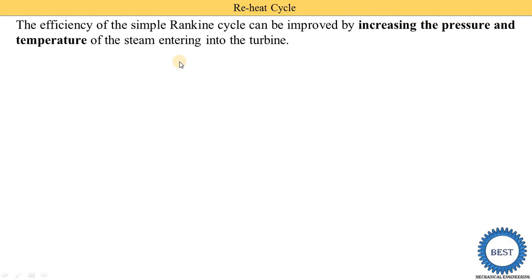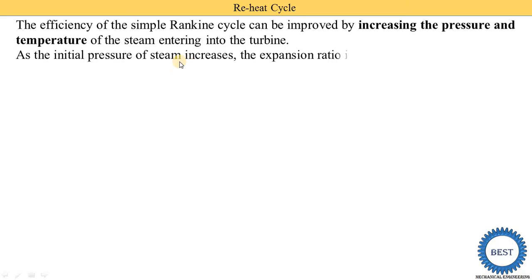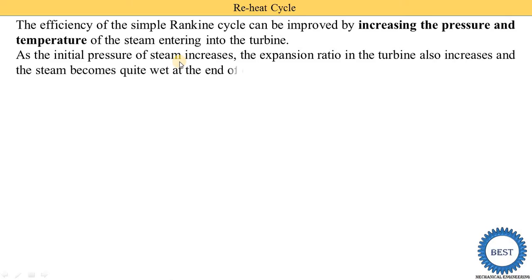First case: by increasing the pressure. When we increase the initial pressure — meaning the pressure at the inlet of the turbine is increased — the expansion ratio in the turbine is increased. And when the expansion ratio of the turbine is increased, the efficiency is increased. This is the basic principle.